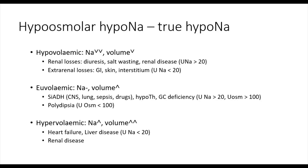Once we've determined that the patient has a hypoosmolar hyponatremia, the next step is to determine the patient's fluid status, from which we can then classify the hyponatremia into one of three subtypes, as previously mentioned. A thorough history and clinical exam should also be undertaken, as this often reveals the cause of the hyponatremia.